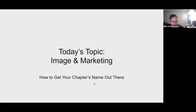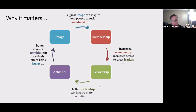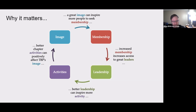Today's topic is on image and marketing — the basics of how to get your chapter's name out there and why image matters. It's central to everything for a chapter because without a strong image it's harder to get new members, which means difficulty getting leaders, which means difficulty running activities, which in turn leads to a lack of image. The stronger your image, the more all of these things improve, and it's a feedback cycle.